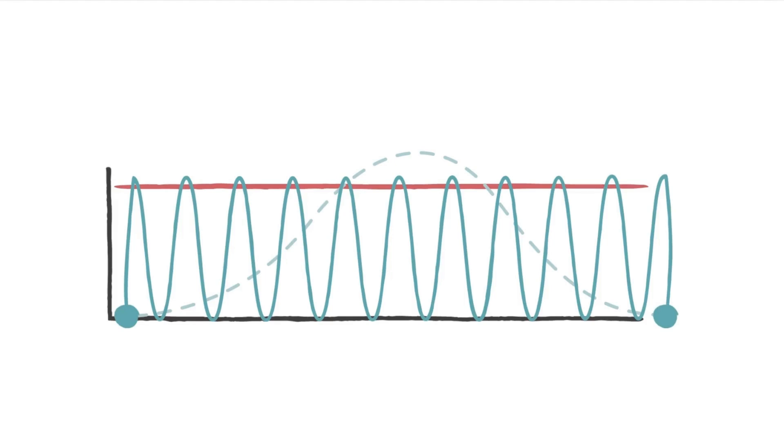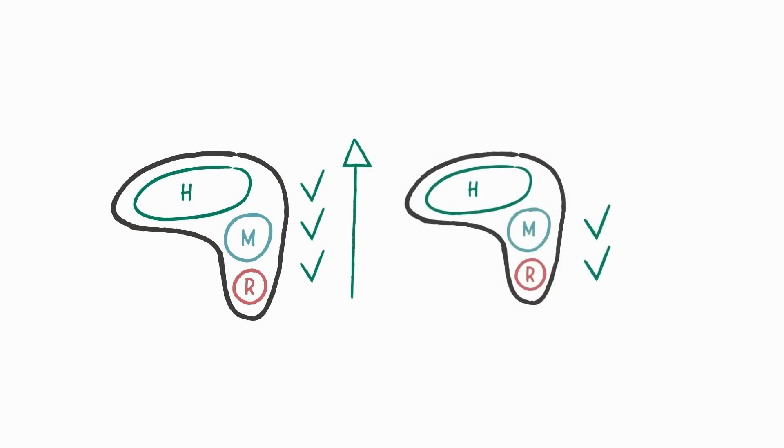This is like a car speeding up and slamming on the brakes without ever cruising smoothly. Ideally, our human, mammal, and reptile brains would work together to help us respond to threats in a healthy way. When we haven't finished dealing with past threats, our human brain tries to suppress the natural reactions of our mammal and reptile brains. This creates a disconnect where our body feels threatened, but our mind doesn't understand why.